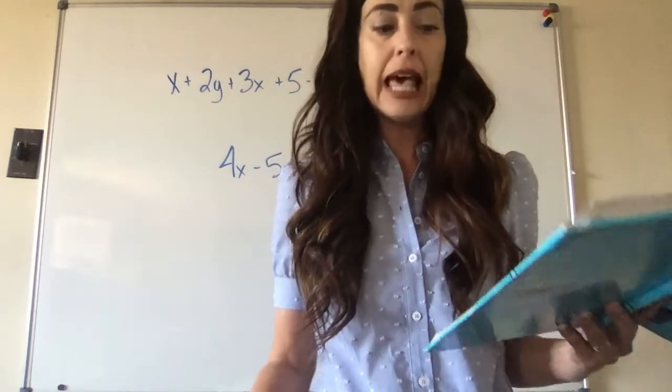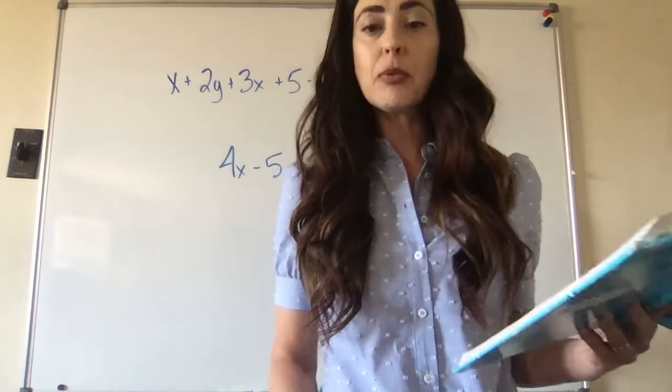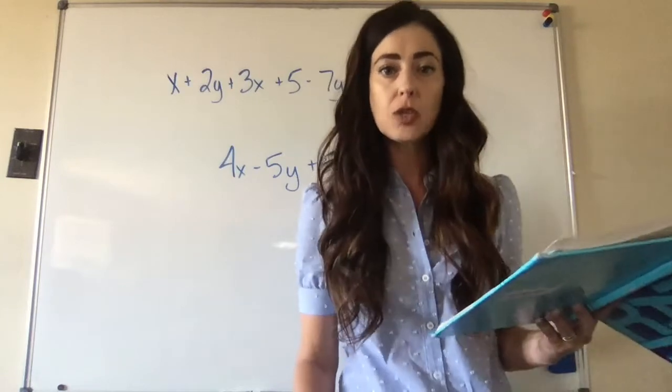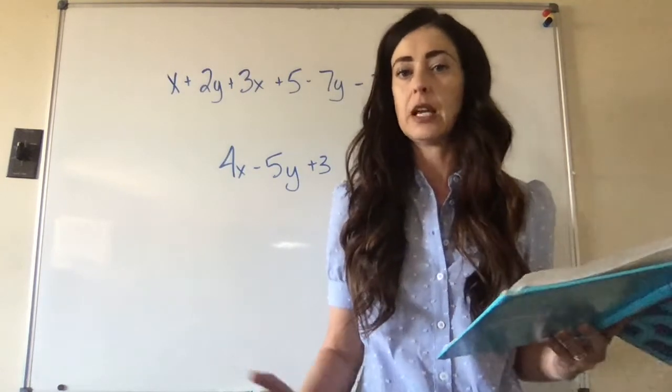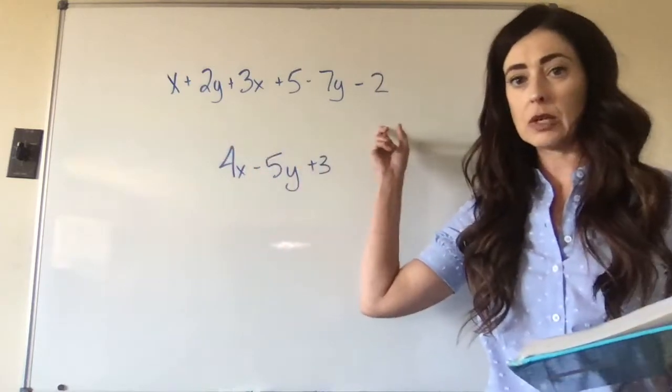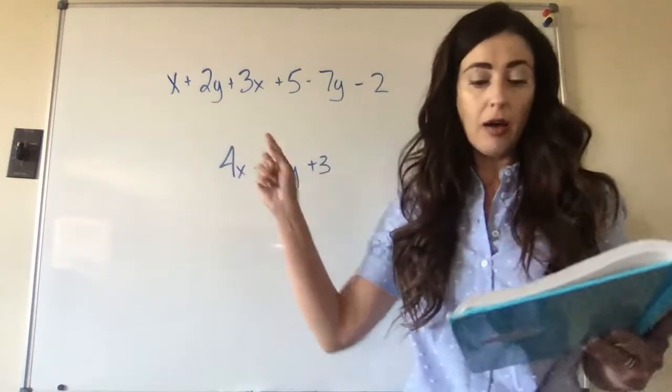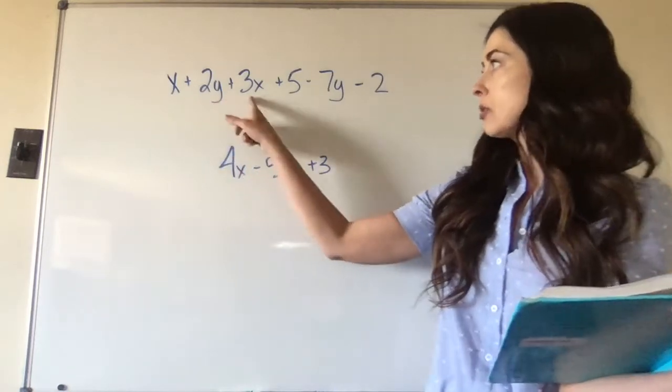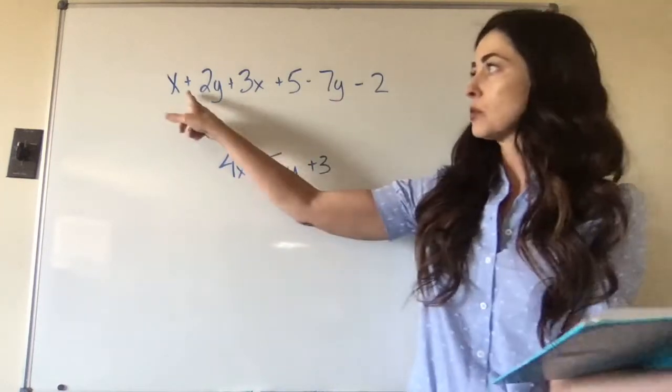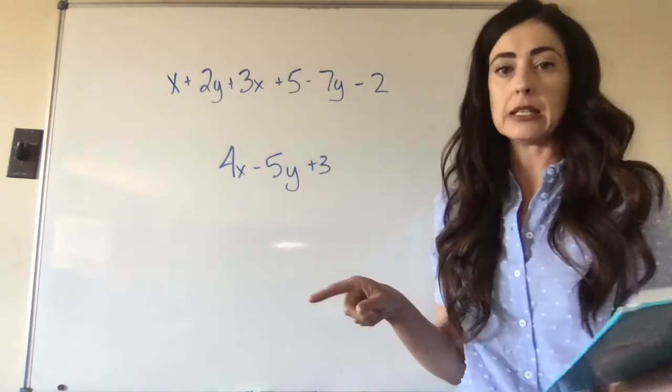A term is anything that's separated by a plus or minus sign. So think of anything separated by a plus or minus sign. This is called an expression. And we have many terms in this expression. So let's count them: 1, 2, 3, 4, 5, 6, because we're being separated by plus and minus signs.